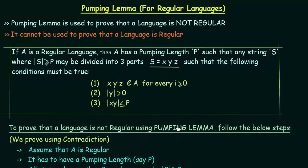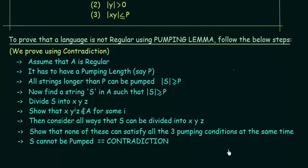To prove that a language is not regular using Pumping Lemma, follow these steps. The proof is done using contradiction. Let's say we have a language A and we want to prove that A is not regular. Since it is proved by contradiction, we first assume that A is regular. From the Pumping Lemma statement, if A is regular it must have a pumping length — let's call it P. All strings whose length is greater than or equal to P can be pumped.